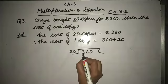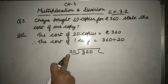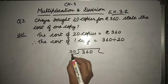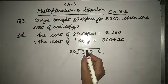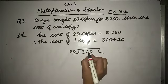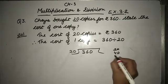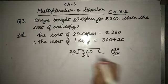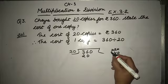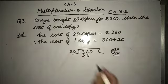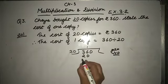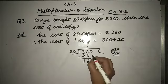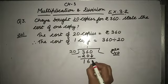Now 360 divided by 20. 3 is smaller than 20, then we will take 36. 20×2=40 is greater than 36, so we will take 20×1. According to this, we will take 1. Now 20×1=20. Subtract: 6 minus 0 is 6, 3 minus 2 is 1. Now note down next number 0.